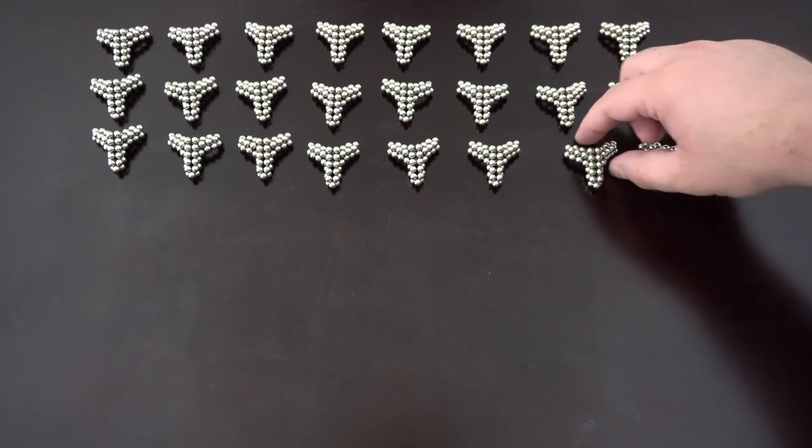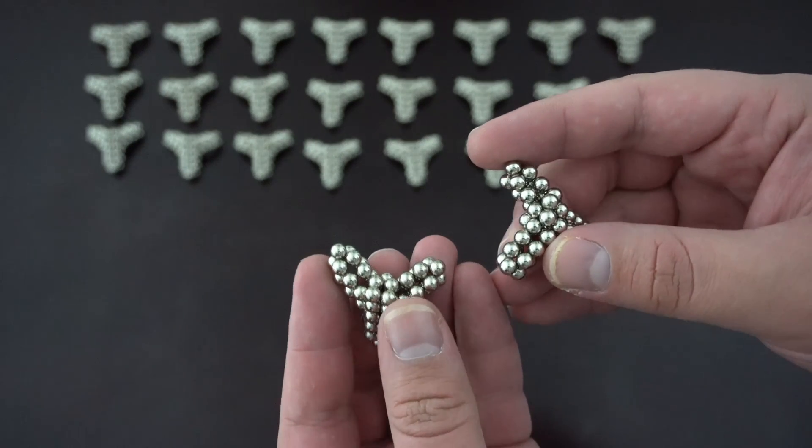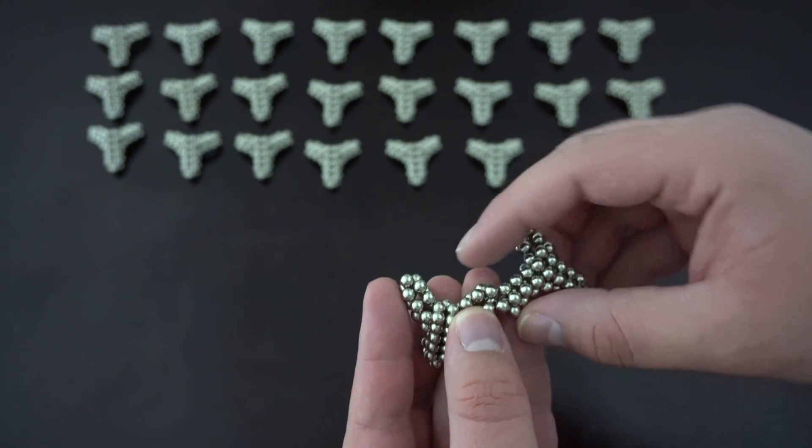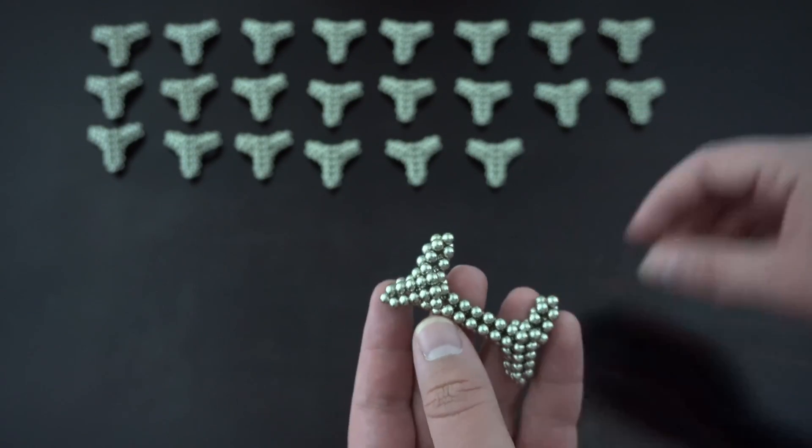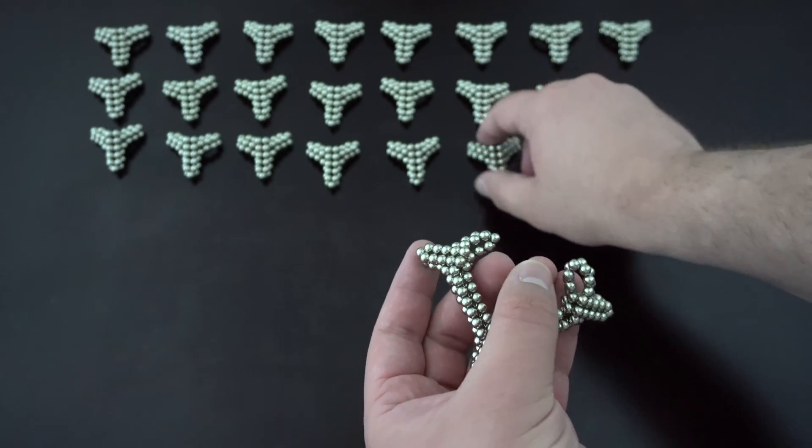So to begin assembling this shape, you now make six subassemblies using these. You attach these edges together like that, and then using two more, you make a square with some little legs like that.